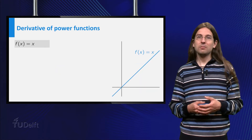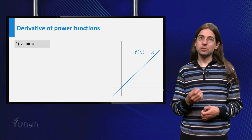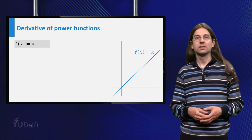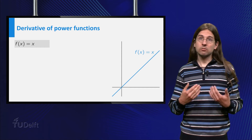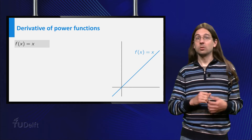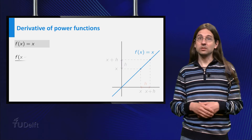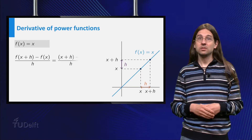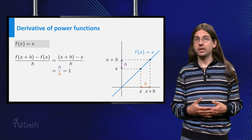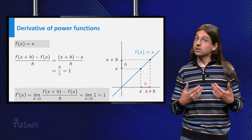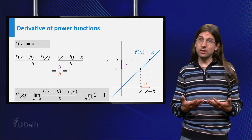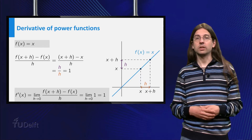The second case we consider is f equals x to the power 1, which is x. Again, the graph is a straight line, so the difference quotient has a constant value, but in this case it equals 1 for all values of h. Thus the derivative of the function f equals x is the constant function 1.